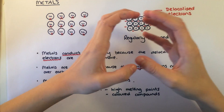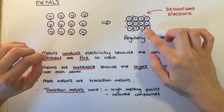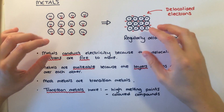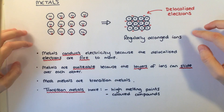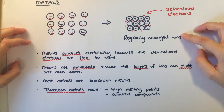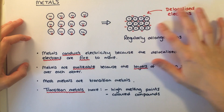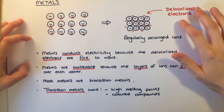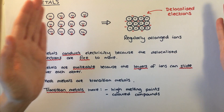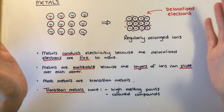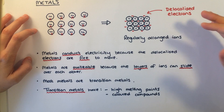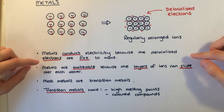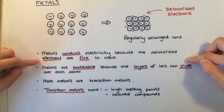The attraction between the negative electron cloud and the positive ions holds them in a tightly packed regular arrangement. The electrons are free to drift around in any direction, but if you attach a power supply they'll be pulled towards the positive terminal, creating an electric current. This is why metals conduct electricity.